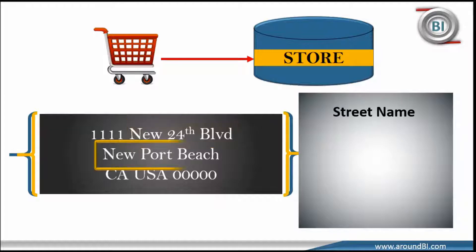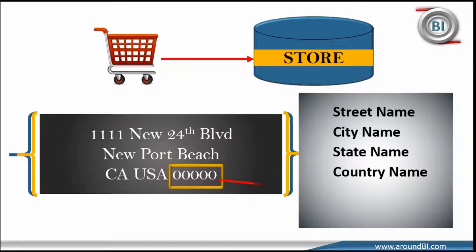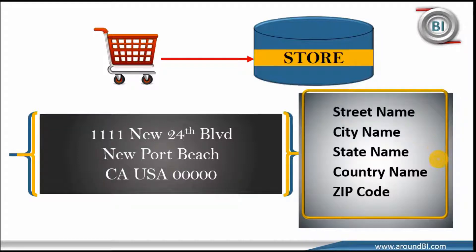It will have a street name, city name, state name and a country name. A zip code will also be associated with each store address. These are some possible attributes that associate with store dimension. If we notice these attributes are text-based and are providing some description about store dimension.